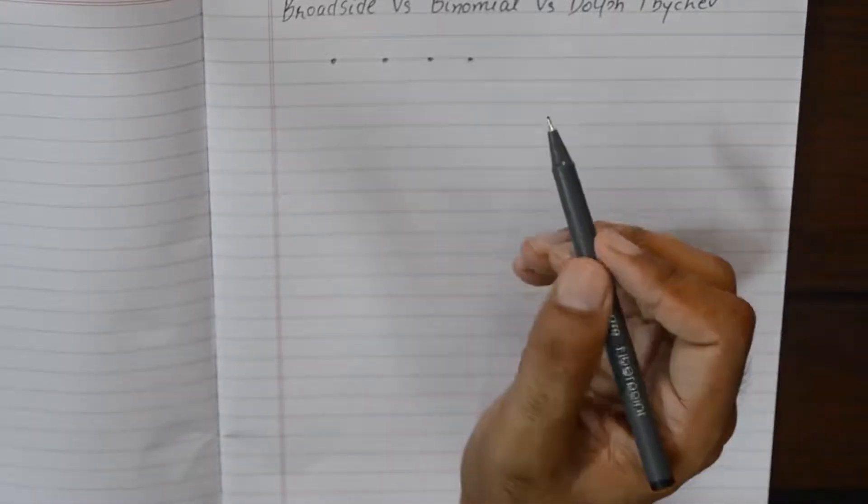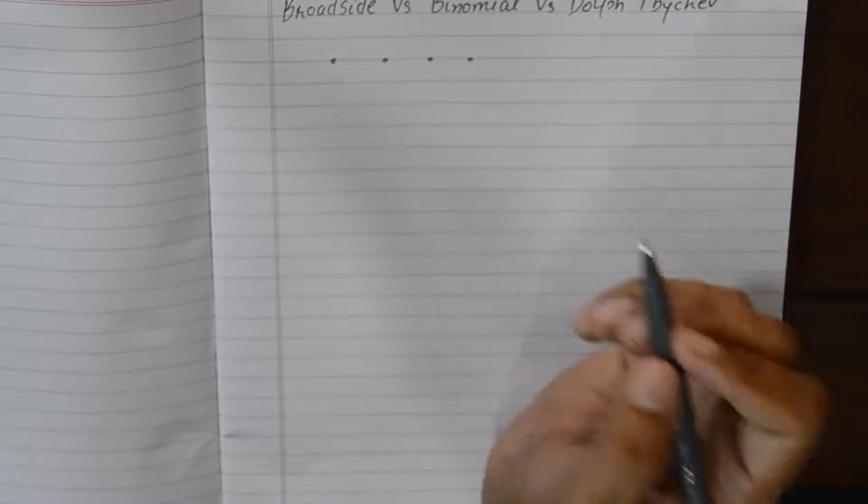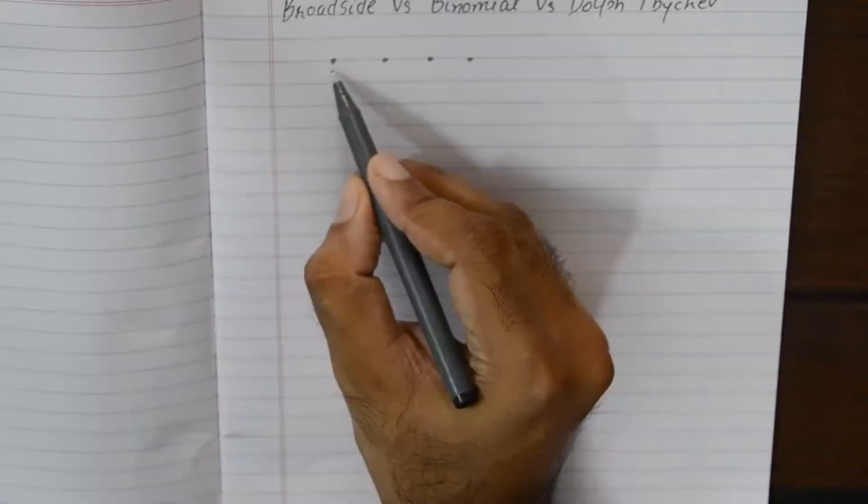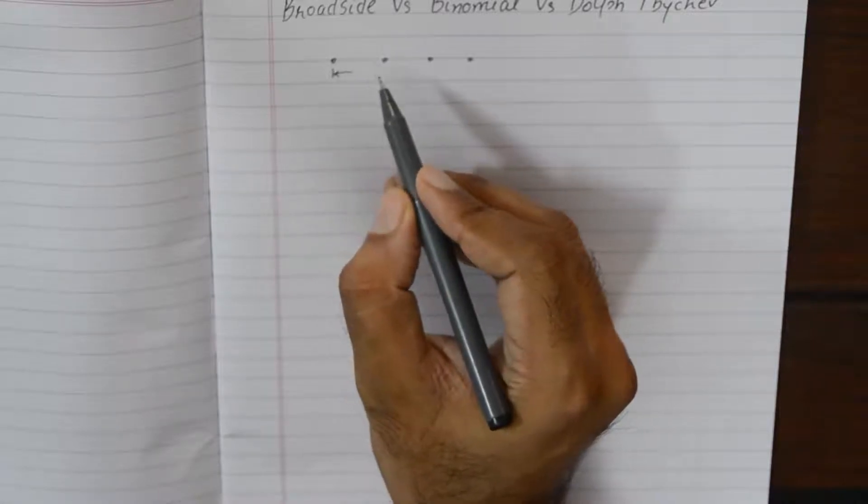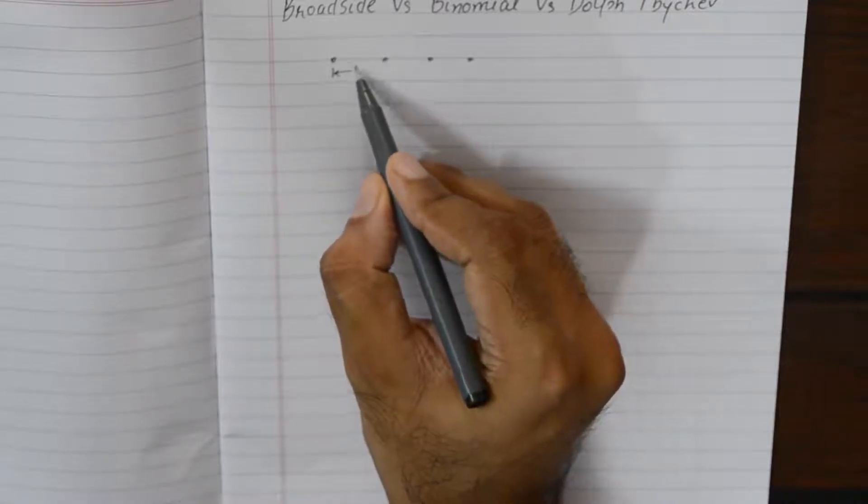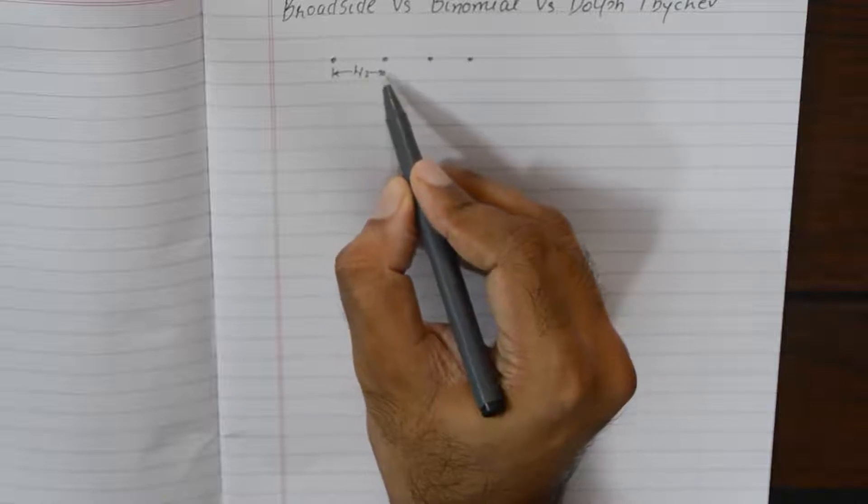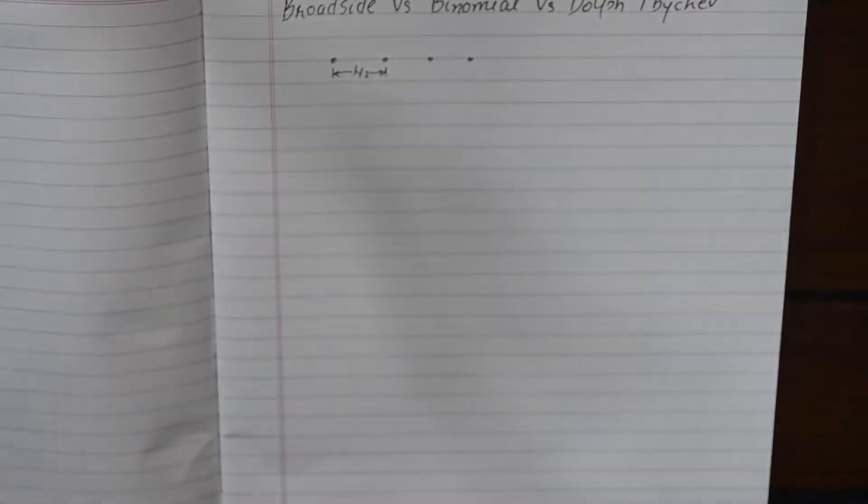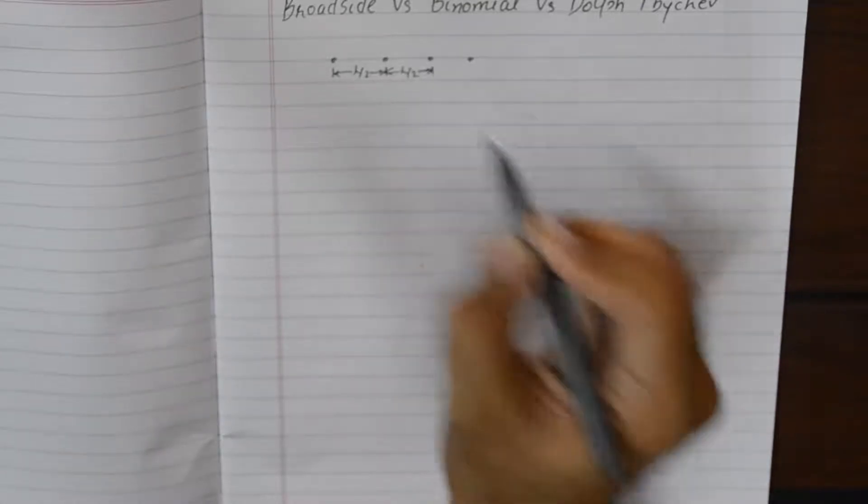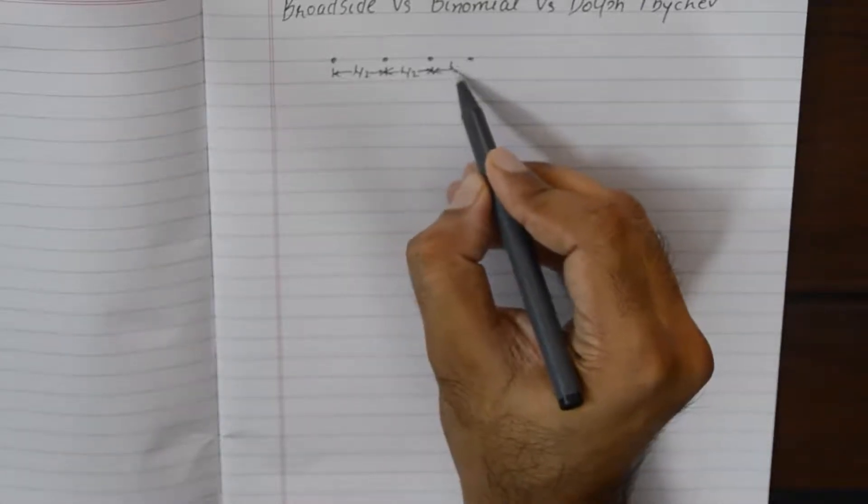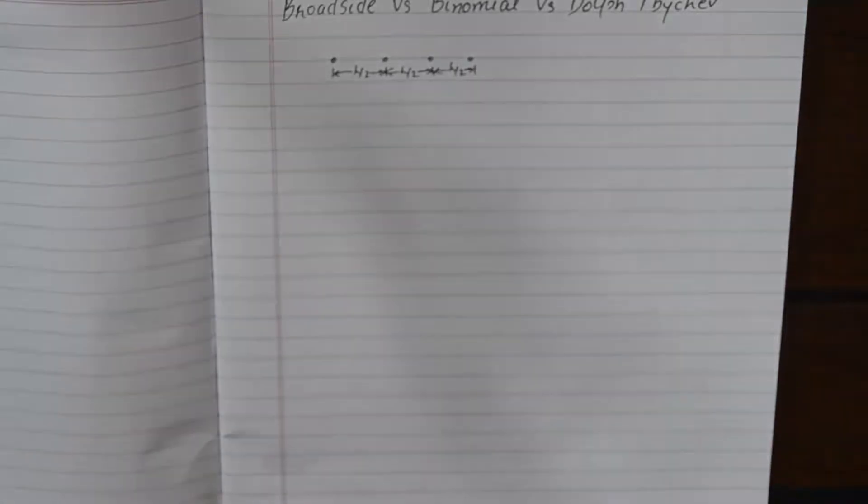Now if we design a four element antenna array, the spacing between all the four elements are going to be same or uniform. For example, if we choose the spacing to be equivalent to lambda by 2, it is going to remain lambda by 2 between all the elements.